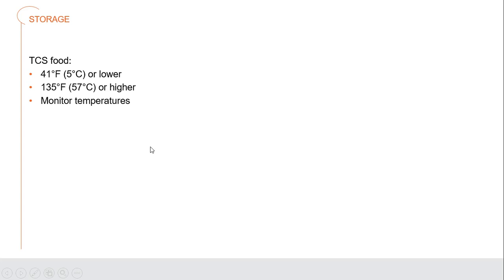TCS foods — time and temperature controlled for safety foods — must be kept at 41°F or lower for cold holding, and 135°F or above for hot holding. Always monitor those temperatures. On a buffet with chafing dishes or heat lamps, ensure they're sufficient to maintain above 135°F; if not, change that food out.